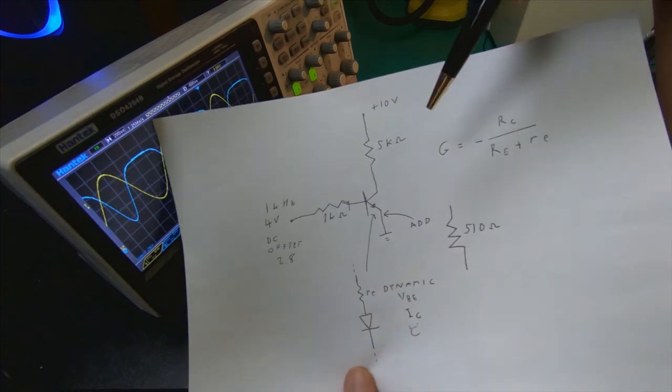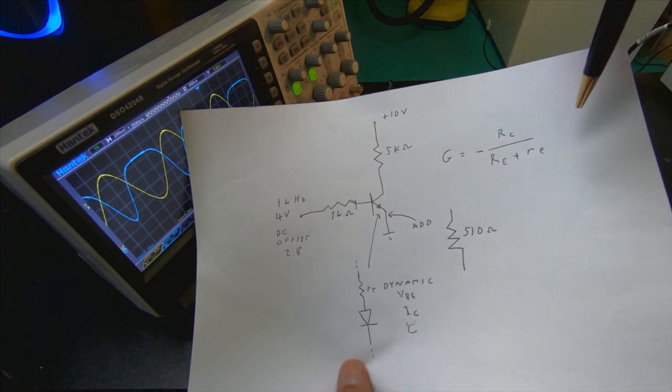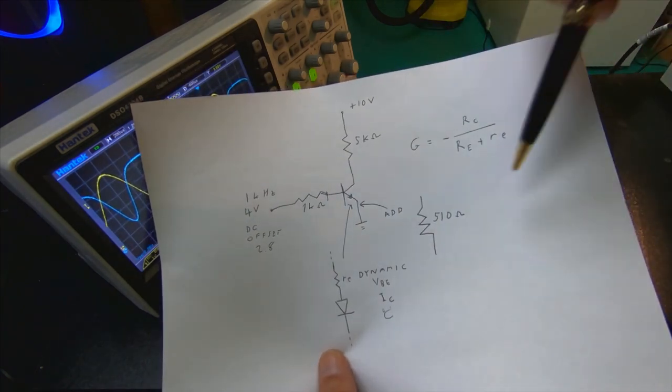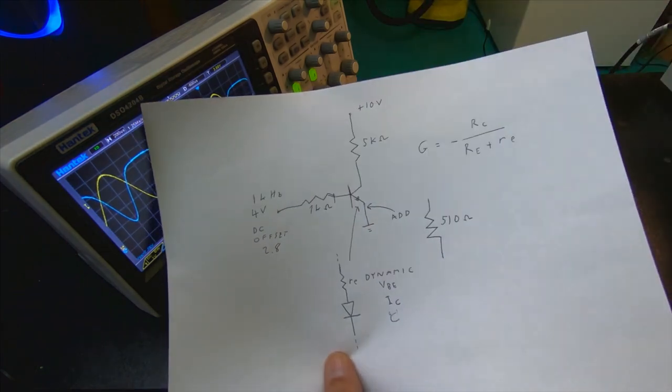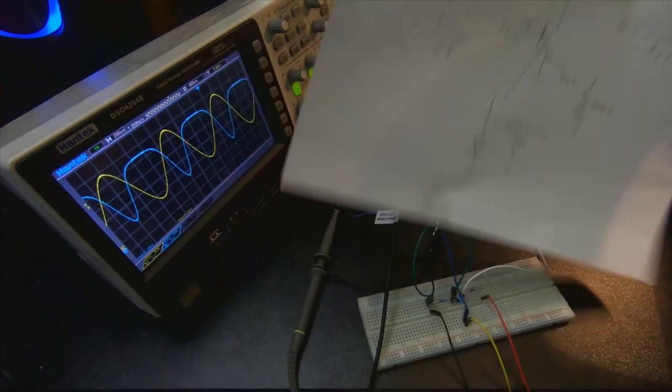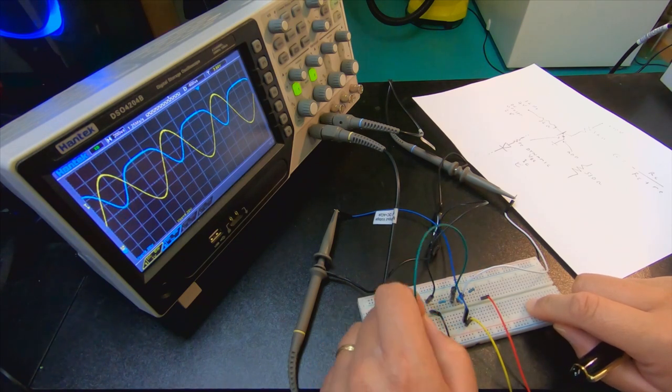So to compensate for this is to actually make the internal RE meaningless. What we're going to do is add this 510 ohm resistor into the emitter and see if that can help us compensate. Now I'll activate the resistor, I'll just take away the short.